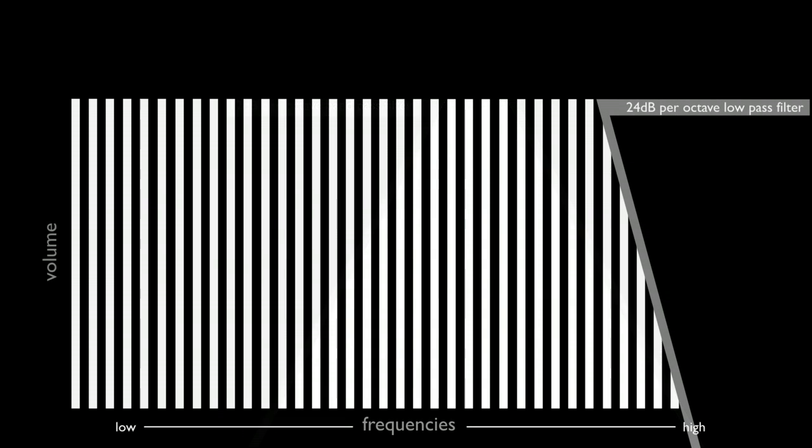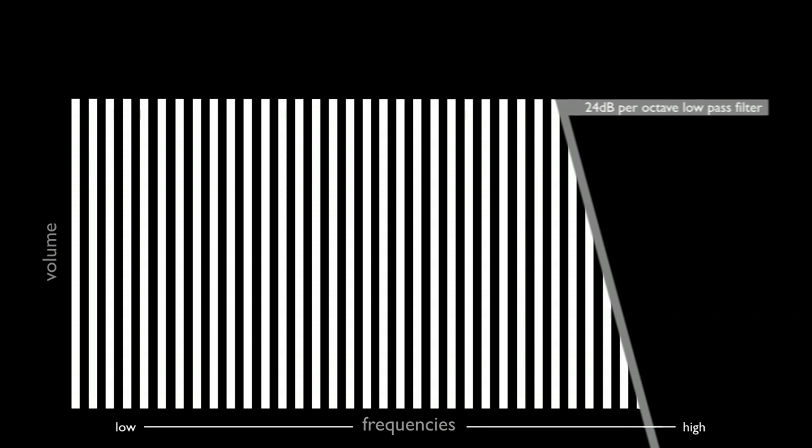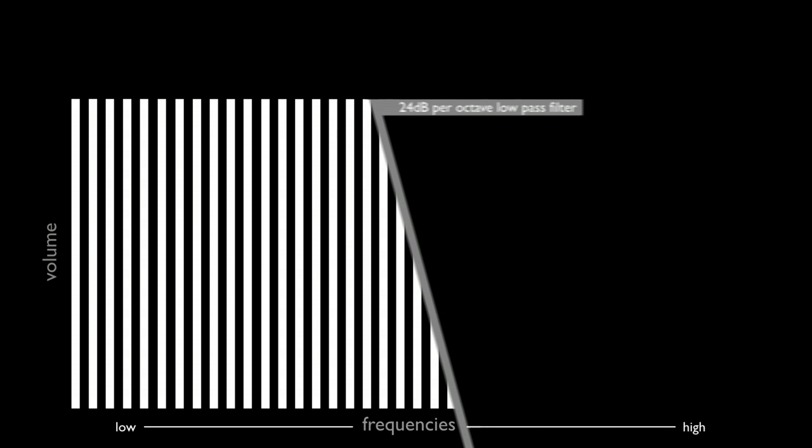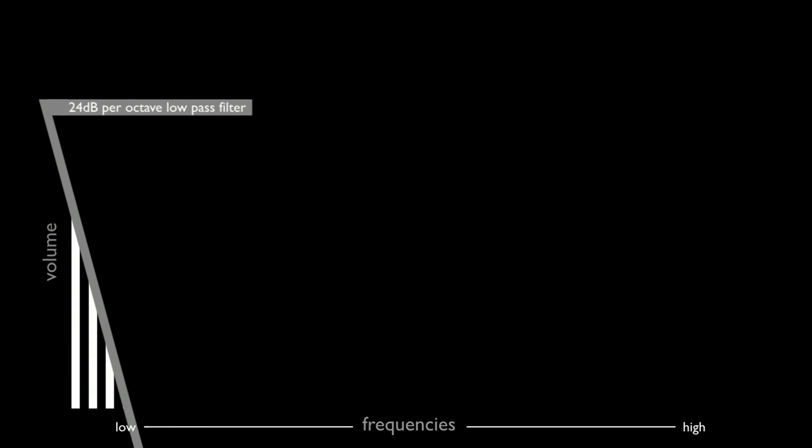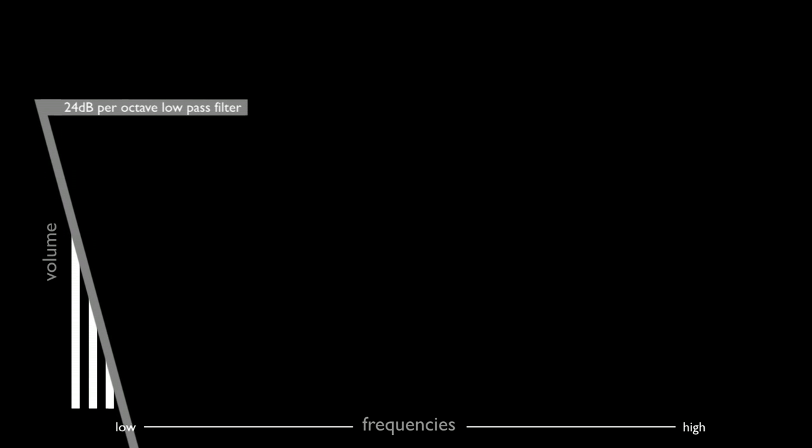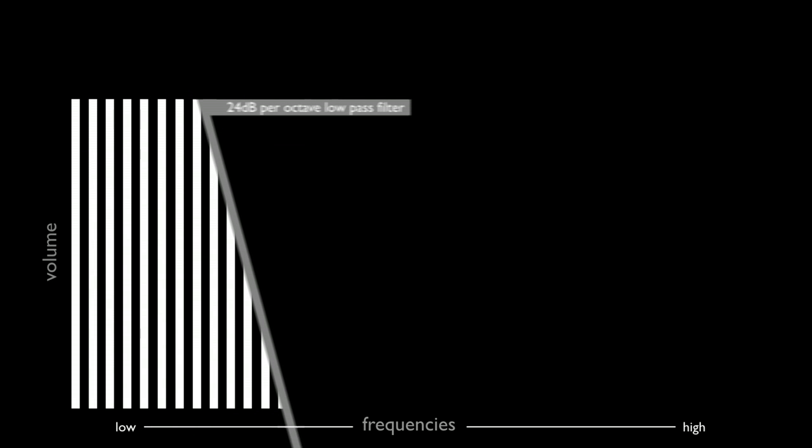The degree to which the harmonics in the region of the cutoff point are removed is called the slope. It is visually demonstrated by the angled bar in the graphic. 24 decibels per octave means there's a 24 decibel drop in volume for every octave of frequencies attenuated by the filter.